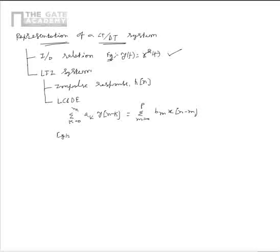For example, y(n) − (1/3)·y(n−1) = x(n) + (1/3)·x(n−1) is an example of an LCCDE.